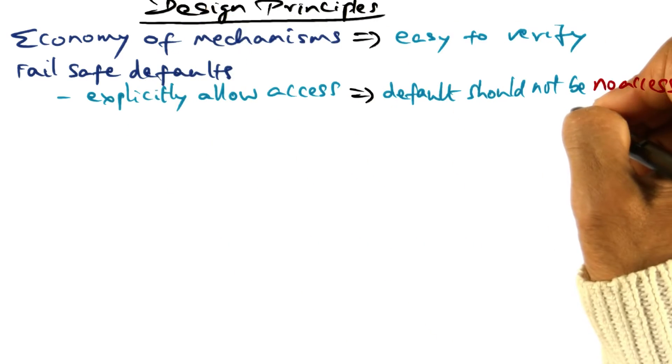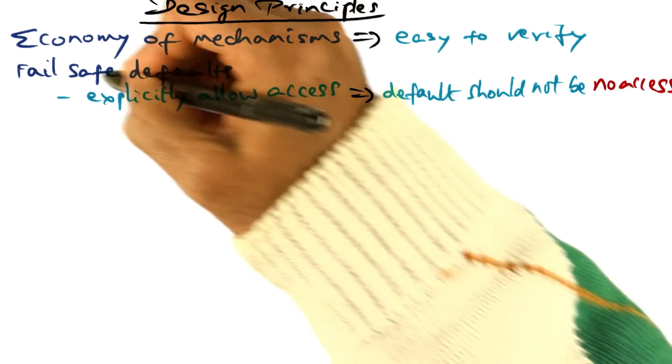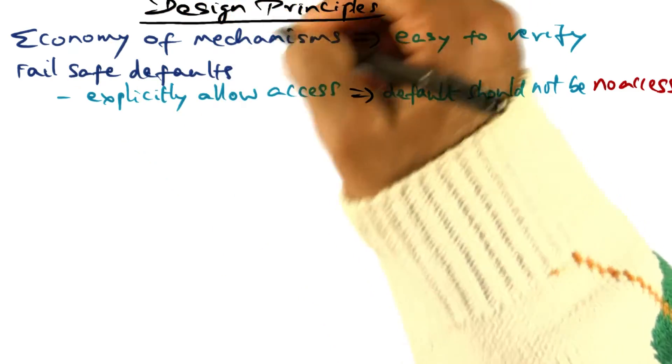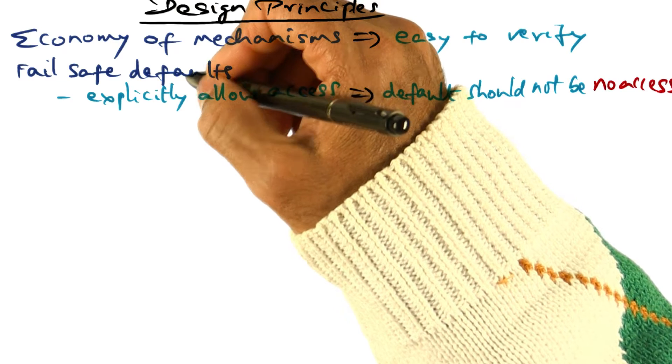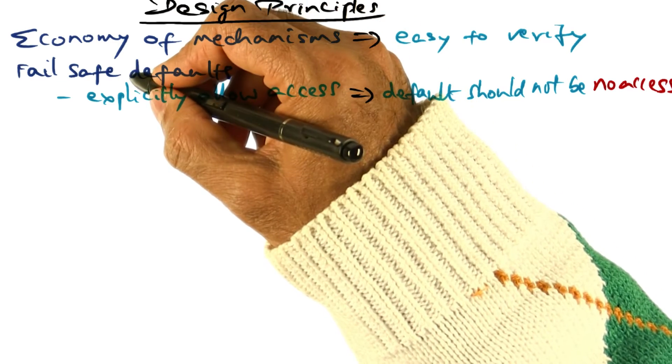So instead of a negative statement like that, you want to explicitly allow access to information. That's the second design principle. In designing the system, you make sure that the default is fail safe.